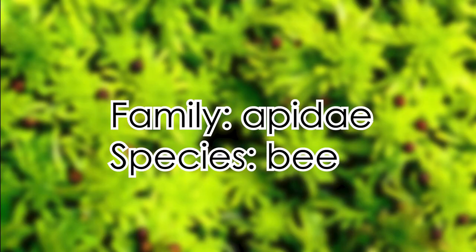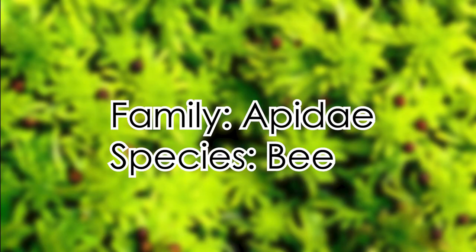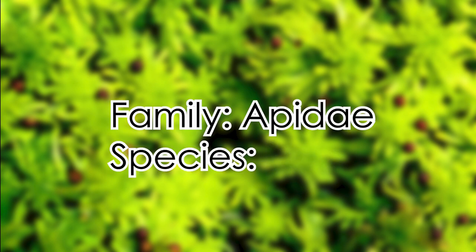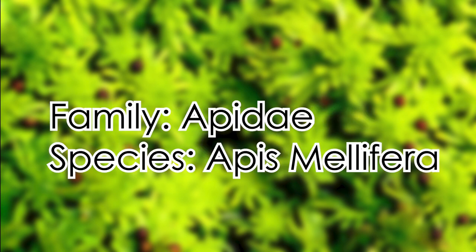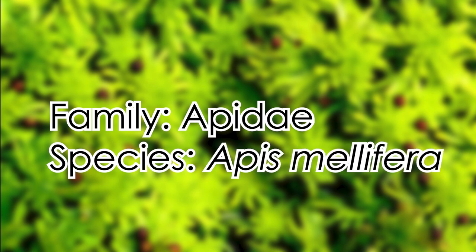When writing out taxa, capitalise the first letter of it, except for the species' scientific names — they get their own special rules. To get the scientific name for a species, you must first write out the genus it's in. Like other taxa, this is given a capital letter. Then write the specific name, which does not have a capital letter. Furthermore, the entire scientific name must be written in either italics or underlined.